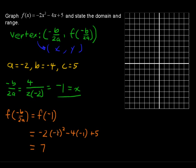You have -2 times (-1) quantity squared. Remember, -1 quantity squared, just a little quick review here, exponents first before multiplication. So it's going to be -1 times -1 is positive 1 times -2. And -2 plus positive 4 plus 5 is positive 7.